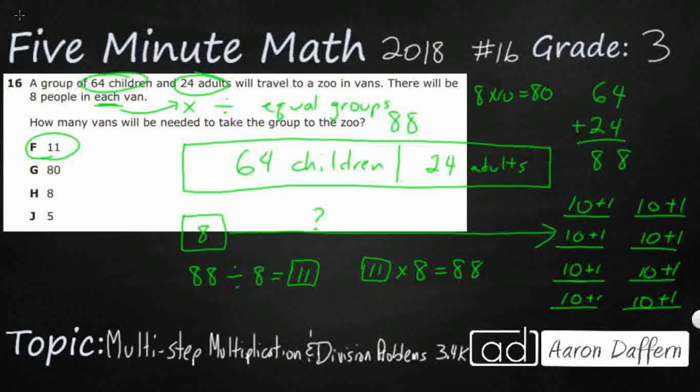We know that if we want to set it up like this, we know our two-digit by one-digit multiplication. Eight times one is eight, and then eight times one again is eight. So our answer is 88. How do we get some of these other answers?